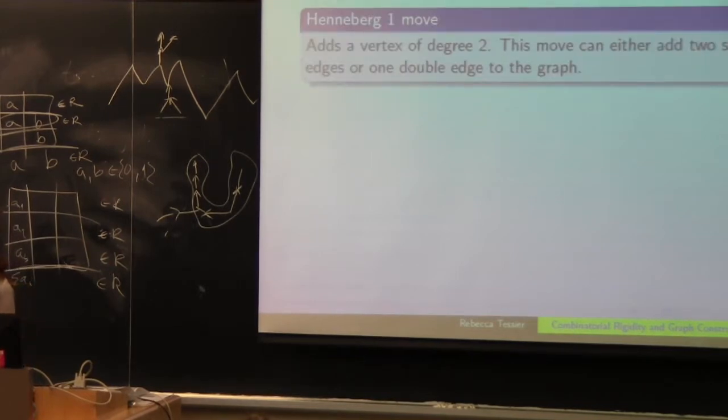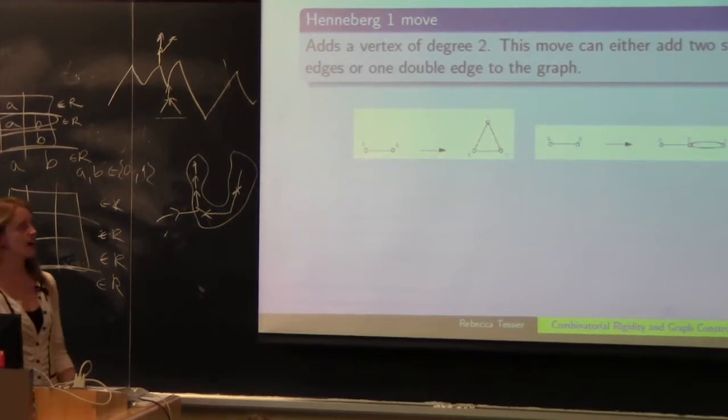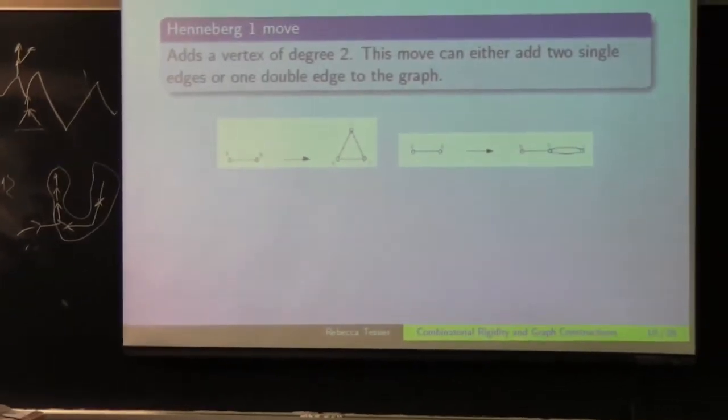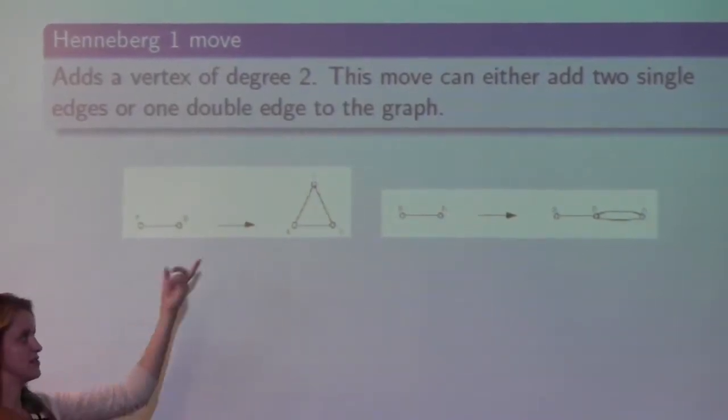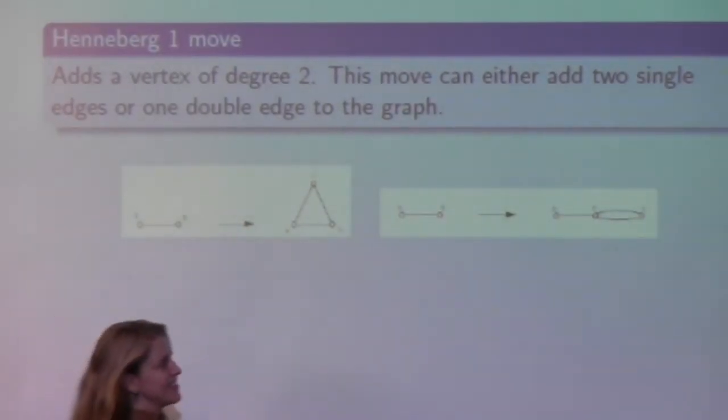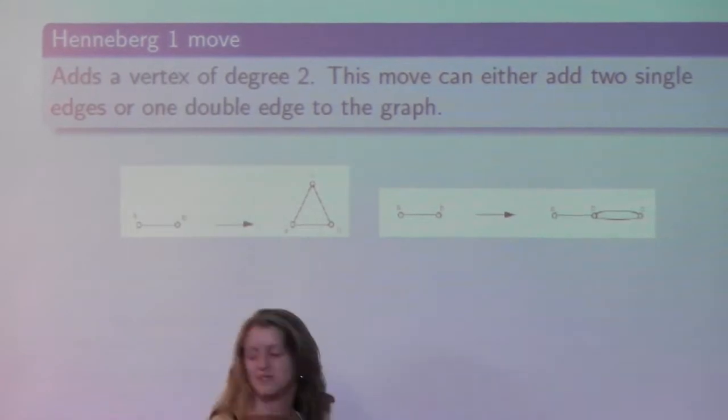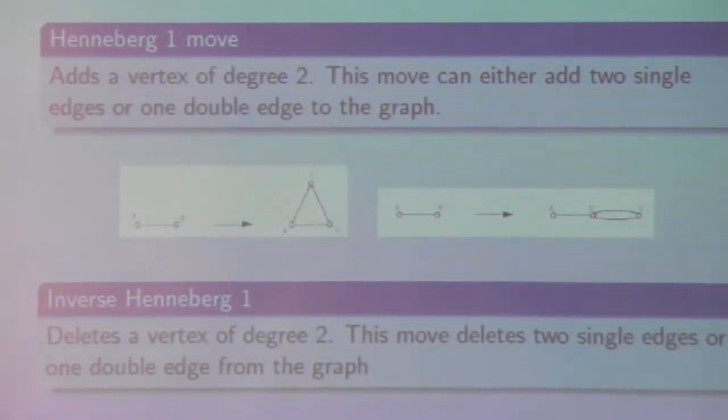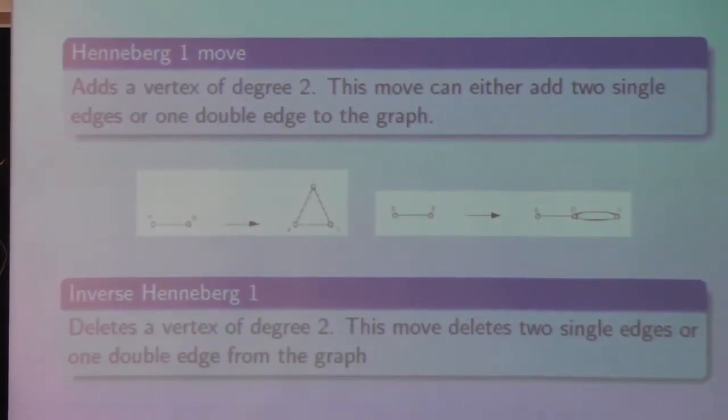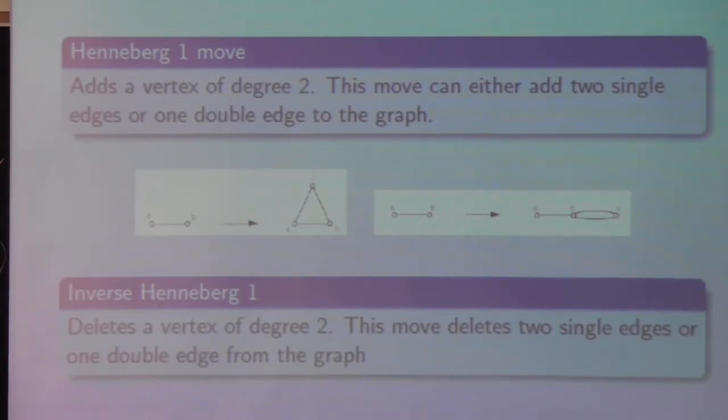So the first move is a Henneberg 1 move, which adds a vertex of degree 2. So this move either adds two single edges or can add a double edge. For example, we've added this vertex C and two single edges, and this vertex C and a double edge. And as well, in the same way, an inverse Henneberg 1 move deletes a vertex of degree 2. So you can again delete two single edges or a double edge.